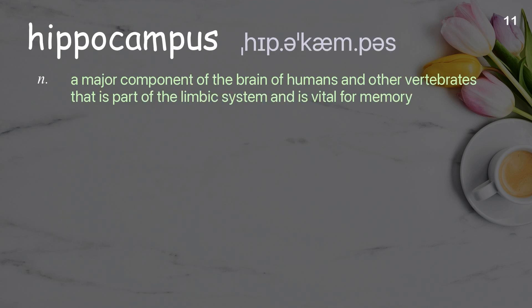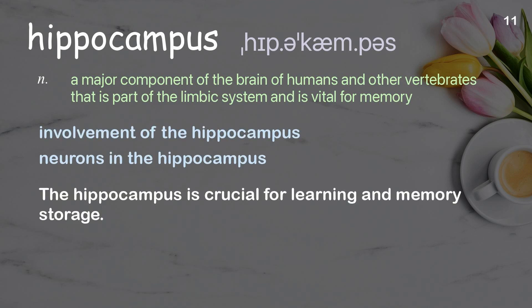Hippocampus: A major component of the brain of humans and other vertebrates that is part of the limbic system and is vital for memory. Examples: Involvement of the hippocampus. Neurons in the hippocampus. The hippocampus is crucial for learning and memory storage.